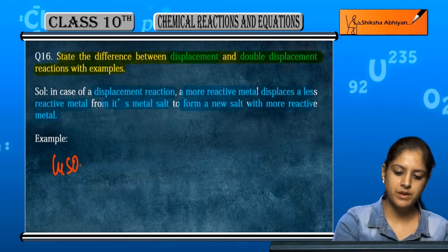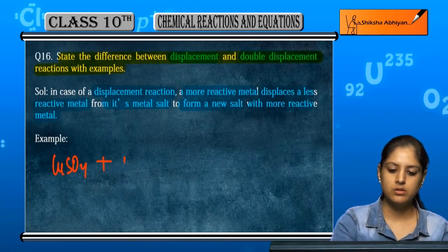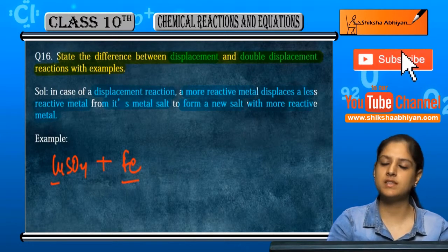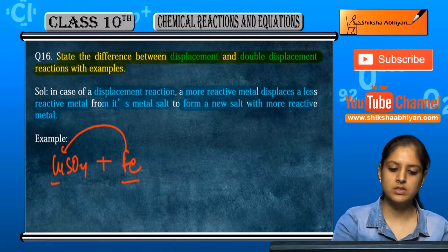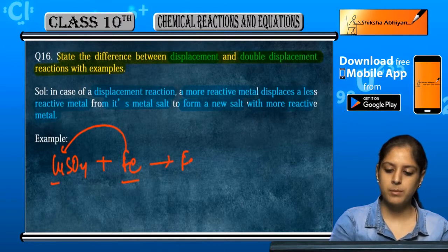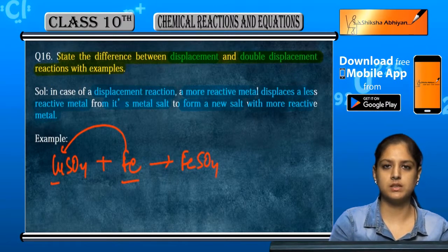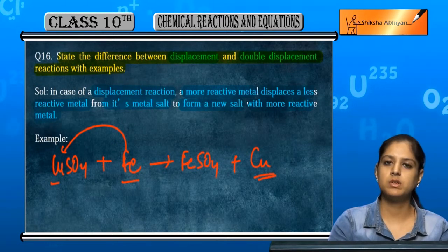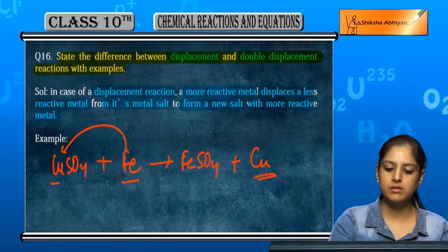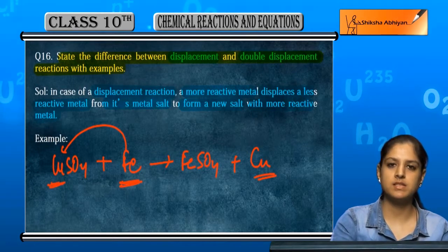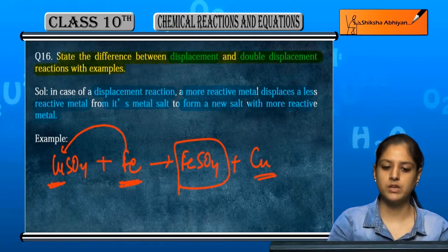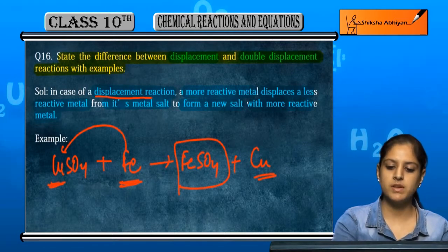As we have seen in this example here, copper sulfate is a metal salt. When iron reacts with copper sulfate, iron is more reactive, so it can displace copper and create a salt of its own. The other metal will be deposited. More reactive metal is displacing the less reactive metal to form a new salt. This is the displacement reaction.